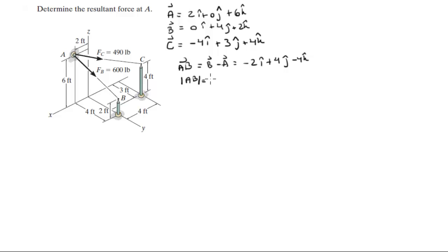By doing the square root of the x component squared plus the y component squared plus the z component squared. Once you plug in these three numbers into this formula you're going to get that the magnitude is 6.